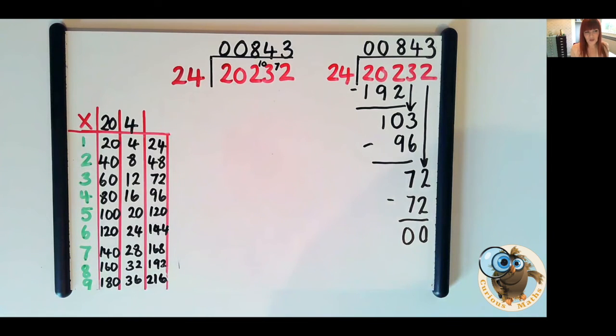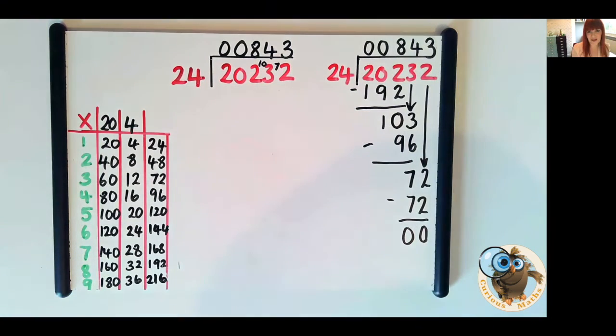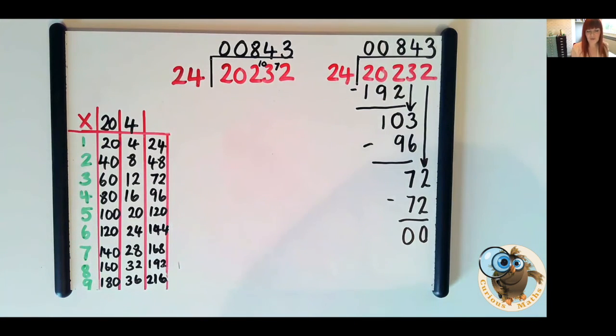A good tip is to choose a number that your child's going to divide by and kind of stick with it. Give them 3 or 4 or 5 questions all divided by 24 like in this example. And actually what that does is it enables them to use the chart that they've already generated and actually just builds confidence because actually using the same numbers and practicing the same ideas.